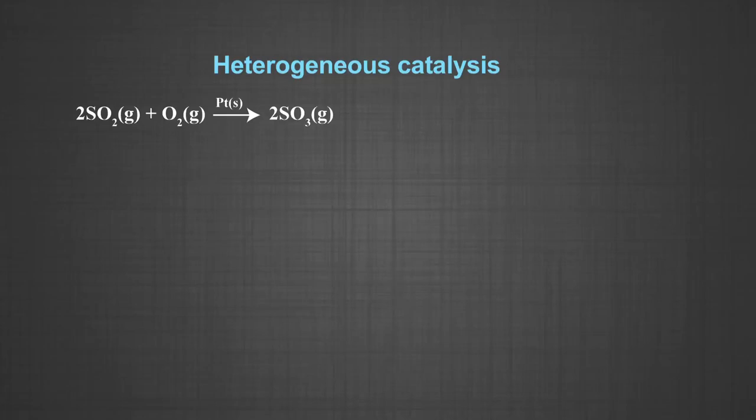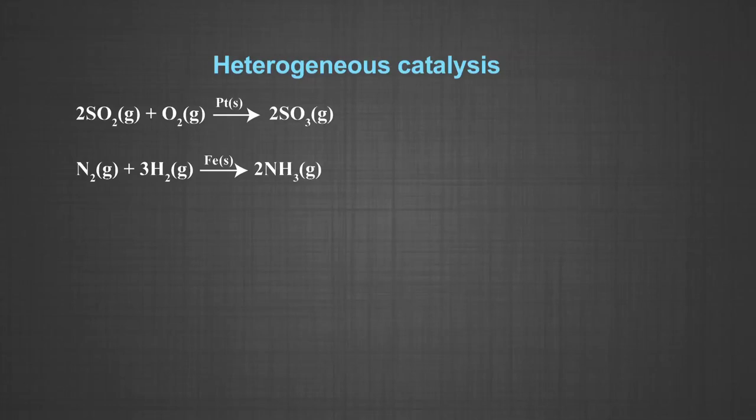Coming to heterogeneous catalysis, the catalytic process in which the reactants and the catalyst are in different phases is known as heterogeneous catalysis. Number one, oxidation of sulphur dioxide to sulphur trioxide in the presence of platinum. The reactants are in the gaseous state while the catalyst is in the solid state. Number two, combination between dinitrogen and dihydrogen to form ammonia in presence of finely divided iron in Haber's process.